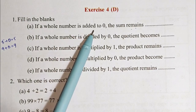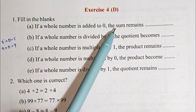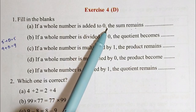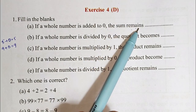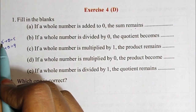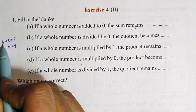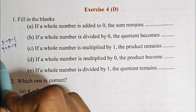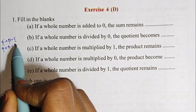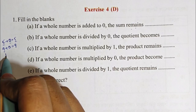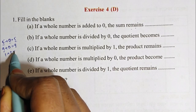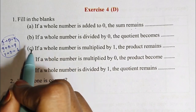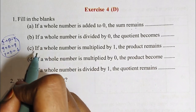Question 1: Fill in the blanks. If a whole number is added to 0, the sum remains the same. For example: 4 plus 0 is 4, 7 plus 0 is 7, 0 plus 0 is 0. When you add 0 to any whole number, the total remains the same whole number.